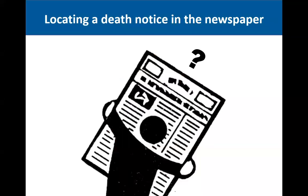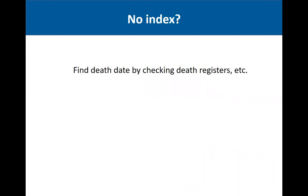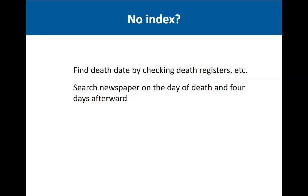So once you actually find the newspaper, how do you locate the death notice? Sometimes a library or repository has created an index — check for that first. But if there's no index, start by finding the death date for the person you are researching, using death records, death registers, and so on. Once you have the death date, search the newspaper beginning on the day of death and at least four days afterwards.